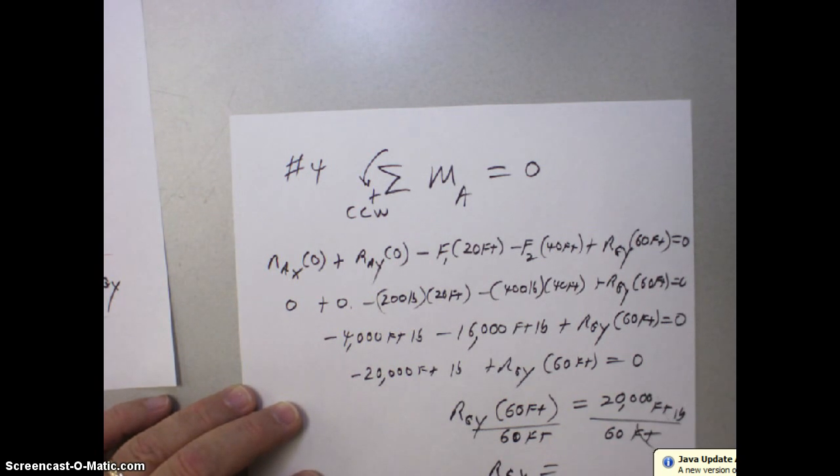And we end up with a positive 20,000 foot-pounds. Then divide by 60 feet. And we have RGY equals divide that out. The feet cancel giving us one. We're left with pounds. So that's 333 pounds.